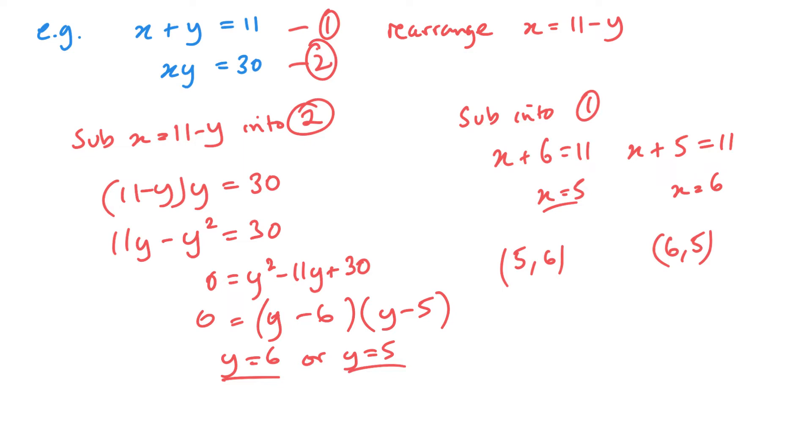Obviously it doesn't always work out this way. And then just like we did last time in the last video, you can substitute these back into the other equation just to double check. So I can substitute both of these back into equation 2 to check. But I can see straight away 5 times 6 and 6 times 5, they're both 30.